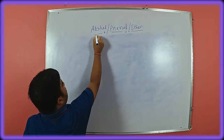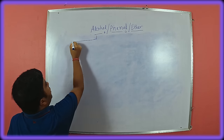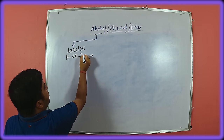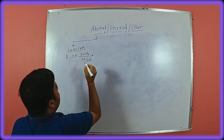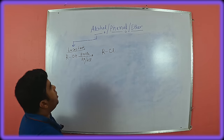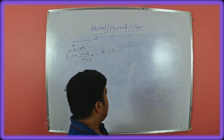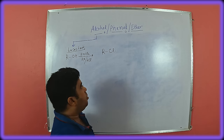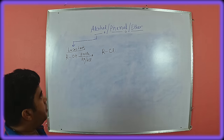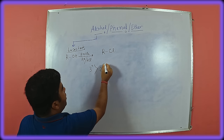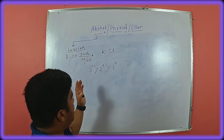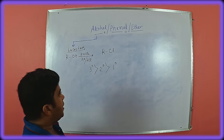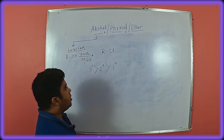Next we will see some important reactions. First is the Lucas test. R-OH in presence of anhydrous zinc chloride and HX (mostly HCl) gives formation of R-Cl. This reaction proceeds through formation of a carbocation. The stability order of carbocation is 3° > 2° > 1°. So the Lucas test always shows a positive result for 3° alcohol very fast, for 2° alcohol it takes some time, and for 1° alcohol it does not occur.